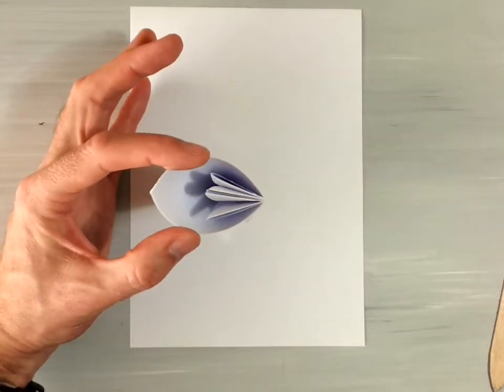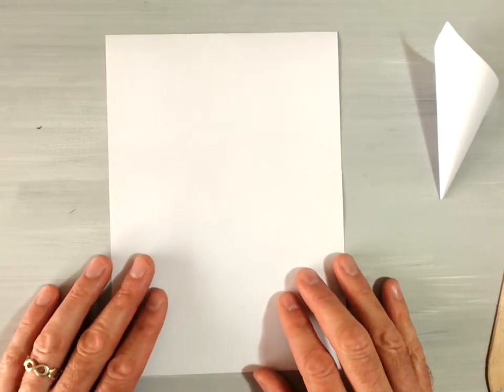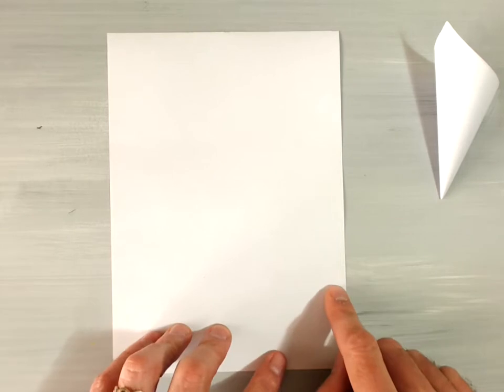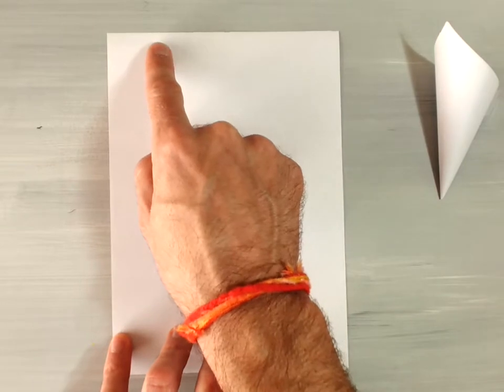To get started you will need an A5 piece of paper, or if you'd like to make a bigger model you can use any size of paper. You'll just need to keep all of your sizes the same so the proportions are the same. To get started you're going to need an origami square.